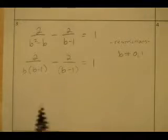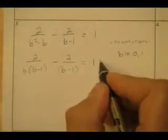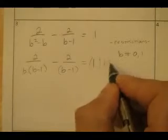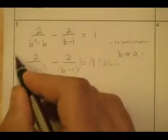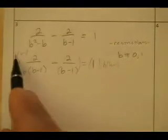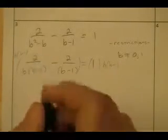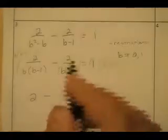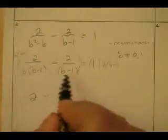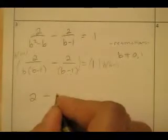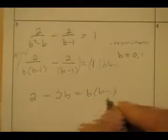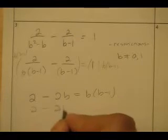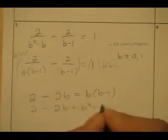The equation equals 1. I'm going to multiply both sides by the LCD, which is b times (b minus 1). Multiplying the left side: the first term's b(b−1) cancels with the denominator giving 2; for the second term the (b−1)'s cancel leaving 2b. On the right side, b times (b minus 1) gives b squared minus b... wait — the right side becomes b squared minus 1. So I get 2 minus 2b equals b squared minus 1.